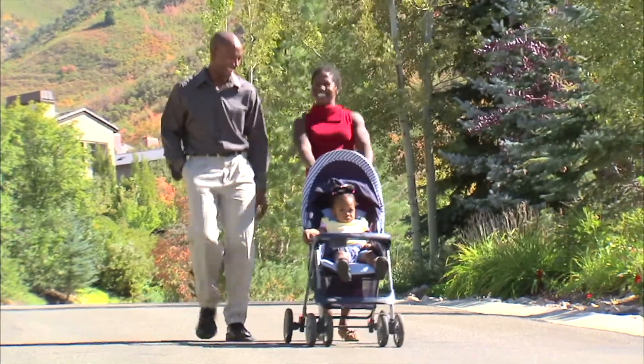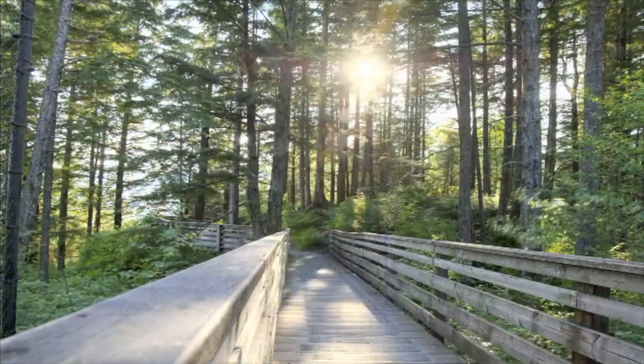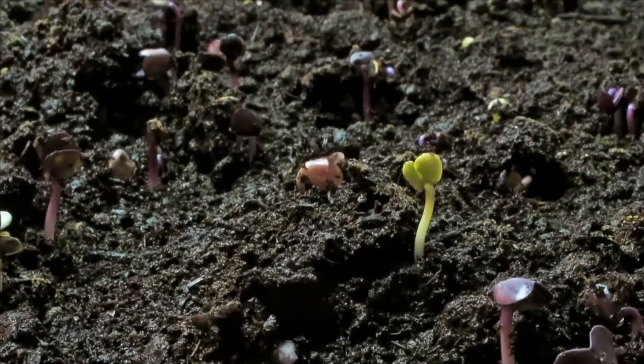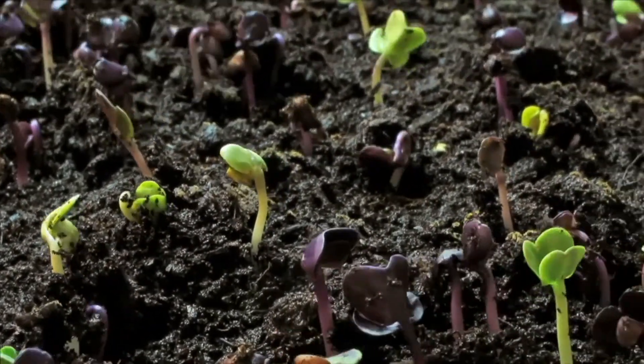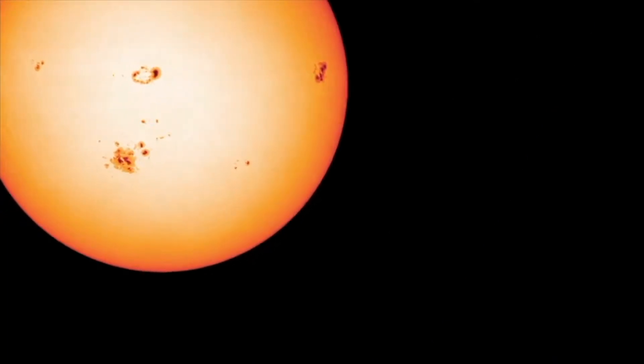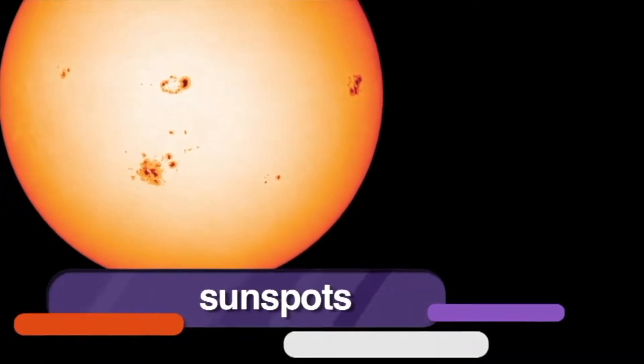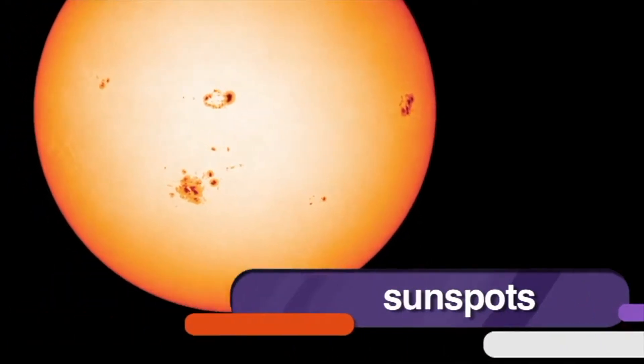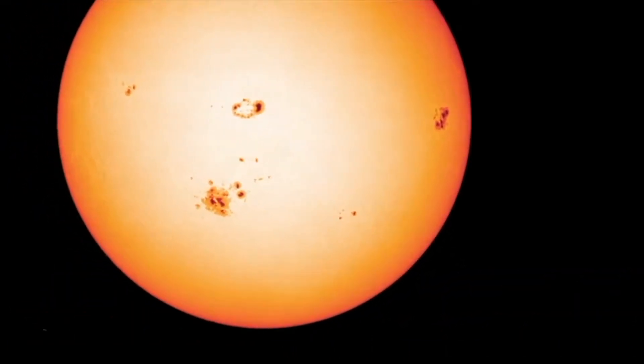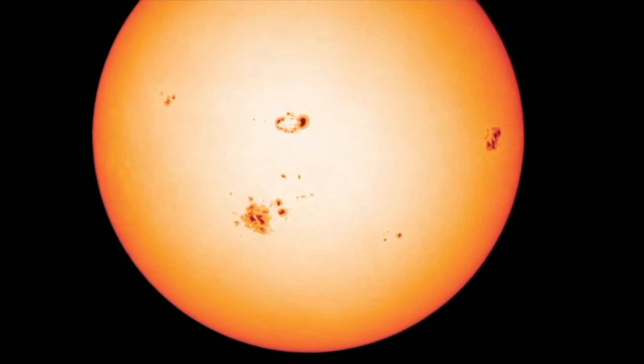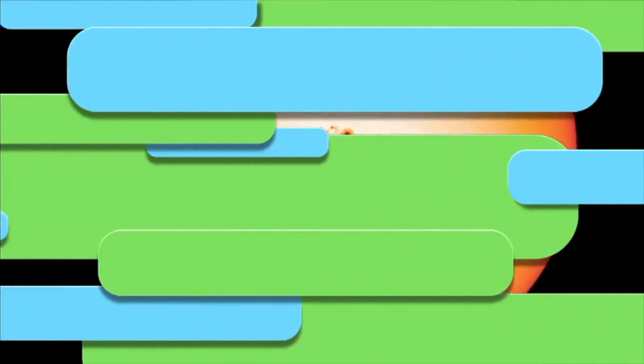As we all know, the sun is super hot. It provides us with warmth, light, and energy here on Earth. But did you know that there are parts of the sun that are actually cool? These are called sunspots. Sunspots are areas on the sun's surface that are cooler and less bright than surrounding areas, are caused by the sun's magnetic field, and occur in cycles. Scientists must use special telescopes to observe these spots, because like the rest of the sun, they are dangerous to look at with the naked eye.